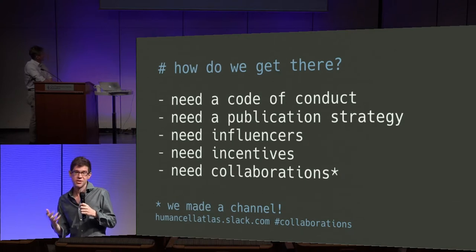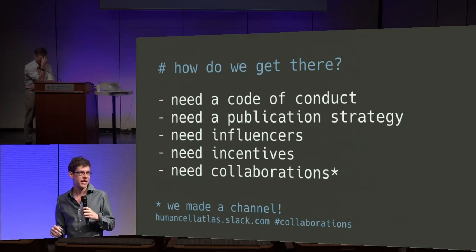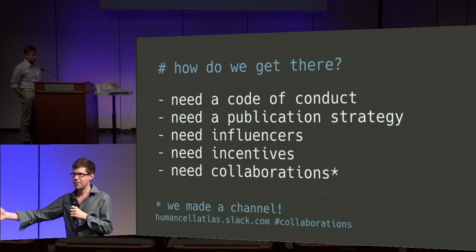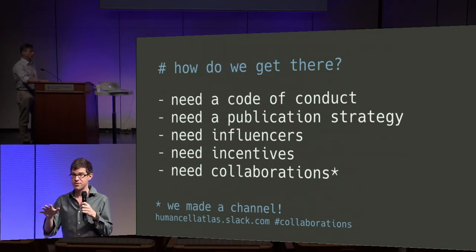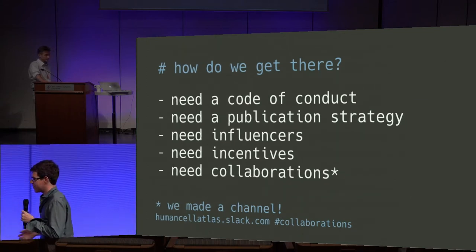We talked about the need for influencers. BioArXiv gained a lot of popularity because well-known scientists started putting their papers there months before publishing in Nature. We need incentives if people are going to be sharing early and often — things like running standard analyses that require a lot of computation for free. There should also be a way for people to find who they want to collaborate with. So during the session we created a new Slack channel, hashtag collaborations, as a place where people can go to find collaborators.